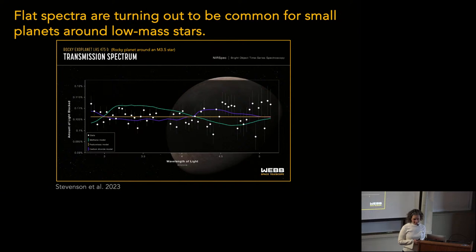The TRAPPIST-1 system has seven planets. Of these, two that I know of have flat spectra like this, but might still have small secondary atmospheres. The others I haven't seen the data on — I know of two that are public, out of seven.